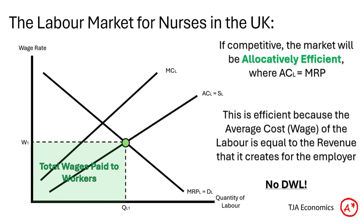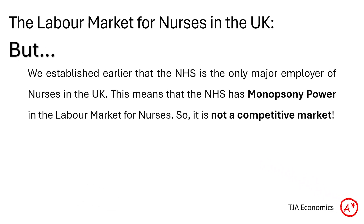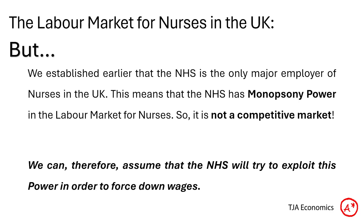Again, this is if the market were competitive and not a monopsony. However, as we'll see, the market for nurses is a monopsony. The NHS is the only major employer of nurses in the UK, meaning the NHS has monopsony power, and therefore the labour market for nurses cannot be considered competitive and will not be allocatively efficient. Instead, the NHS will try to exploit their monopsony power to force wages down.